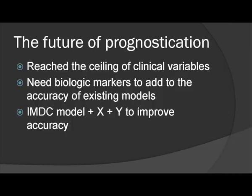I think we've really reached the ceiling of our prognostic factors. We've had many different prognostic factor models and lots of clinical variables with many publications, but we're in desperate need to improve them using biologic markers. Biomarkers should not just be studied on their own, because they're not helpful in isolation. We want to know whether adding biomarker X or Y to existing models like the IMDC model actually improves accuracy. If it doesn't, the biomarker doesn't add value since we already have a working clinical model.